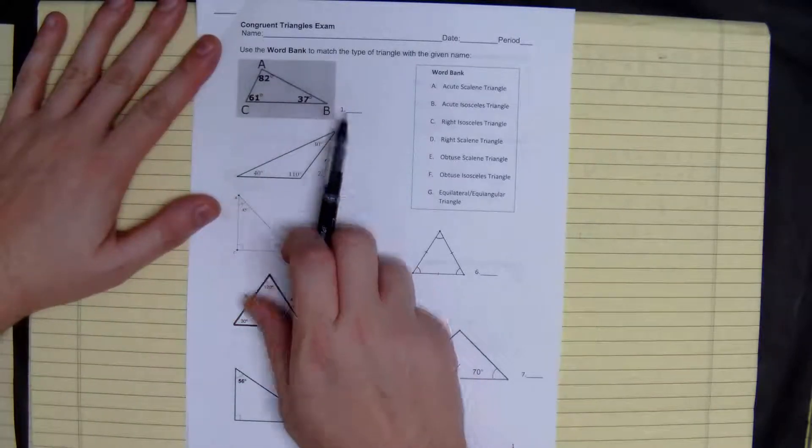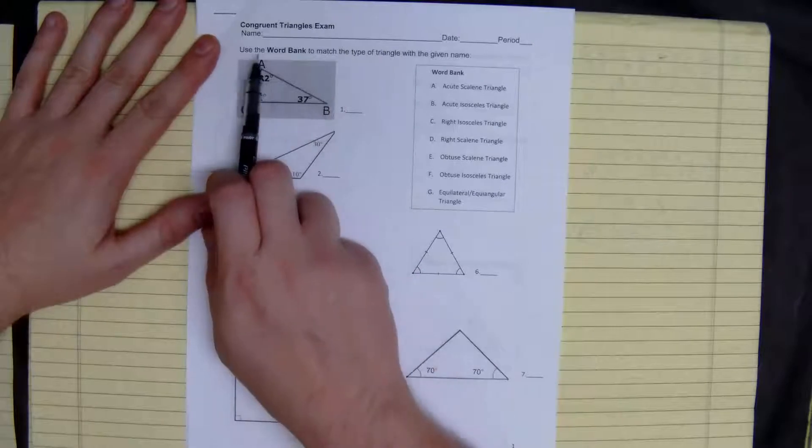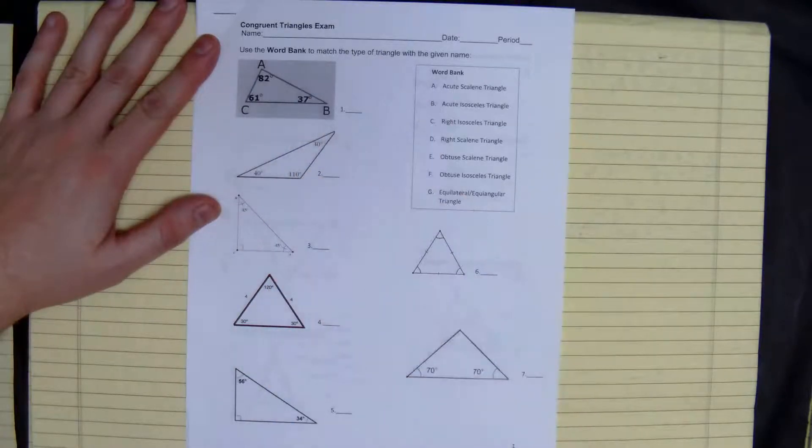Alright, we're looking at number 1 through 7 and it says use the word bank to match the type of triangle with a given name.